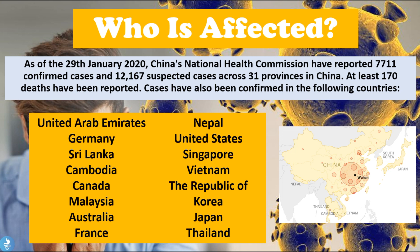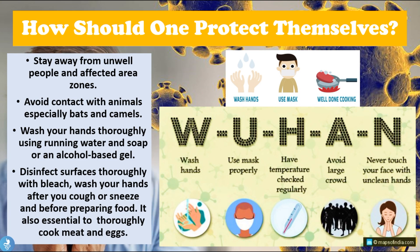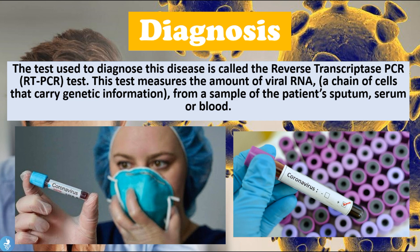So how should one protect themselves against the coronavirus? Stay away from unwell people and affected area zones. Avoid contact with animals, especially bats and camels. Wash your hands thoroughly using running water and soap or an alcohol-based gel. Disinfect surfaces thoroughly with bleach, wash your hands after you cough or sneeze and before preparing food, and thoroughly cook meat and eggs. The WUHAN acronym summarizes this: Wash hands, Use your mask properly, Have your temperature checked regularly, Avoid large crowds, and Never touch your face with unclean hands.